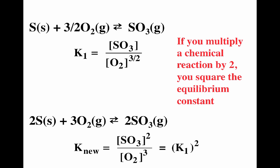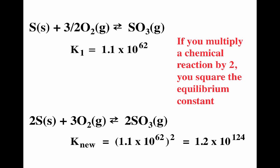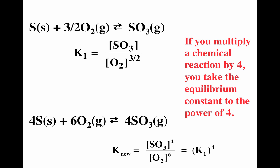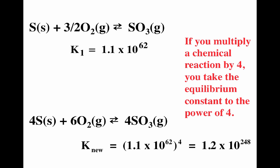If we take this reaction and multiply it by 2, notice what happens to the equilibrium expression. The top reaction has K equal to SO3 divided by O2 to the three-halves. The bottom one has SO3 squared divided by O2 cubed — the bottom one is just the top one squared. Reactions are very similar to mathematical equations: you can multiply them by numbers, you can swap them, and you can even add them. If you multiply a reaction by a number, you have to take the equilibrium constant to that power to get the equilibrium constant for the new reaction. If the top one has equilibrium constant 1.1 times 10 to the 62nd, multiplying the reaction by 2 gives 1.2 times 10 to the 124th. Multiplying by 4 gives 1.2 times 10 to the 248th.